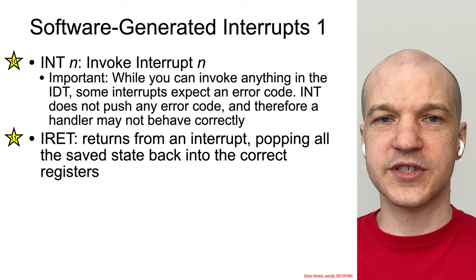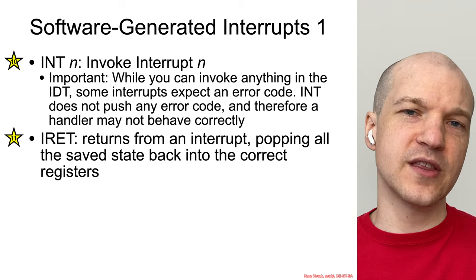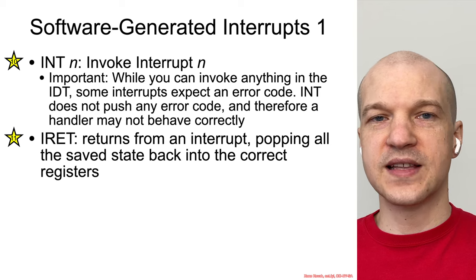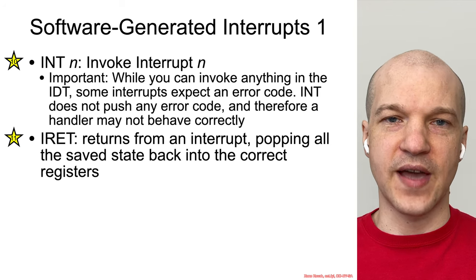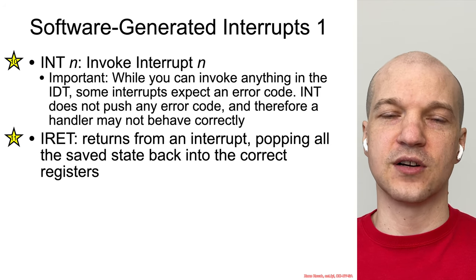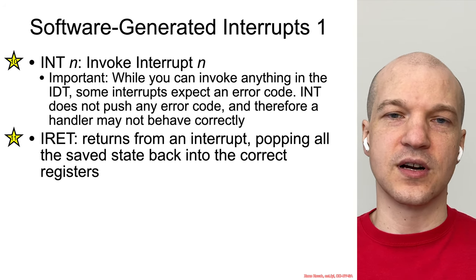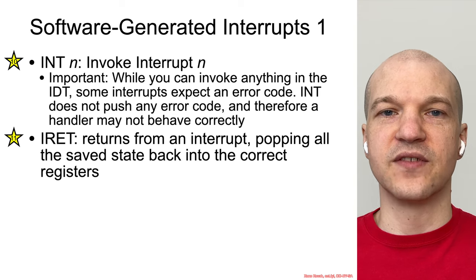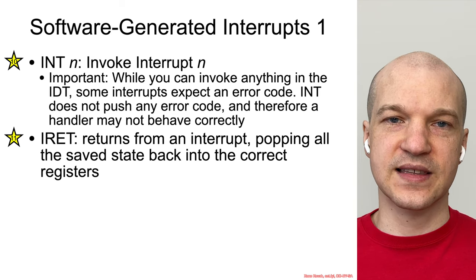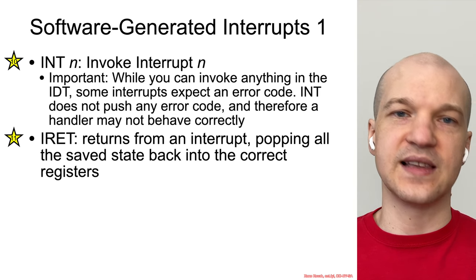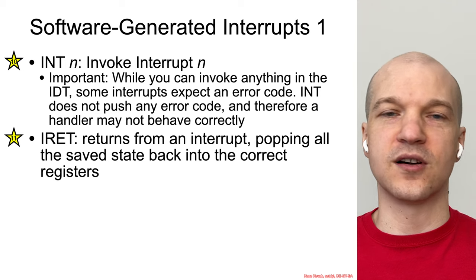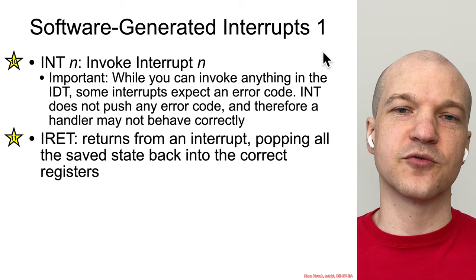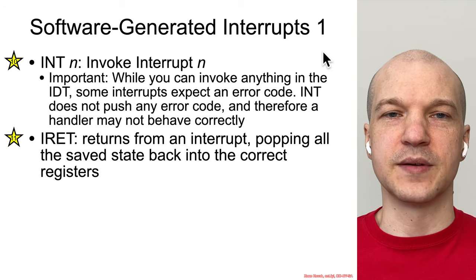So the software generation — there could be hardware-generated interrupts, which tend to deal with external peripheral hardware: network cards, video cards, keyboards, USB devices — things like that that basically say, 'Hey, something occurred with my hardware, please deal with it, kernel.' But there's also these software-generated interrupts.